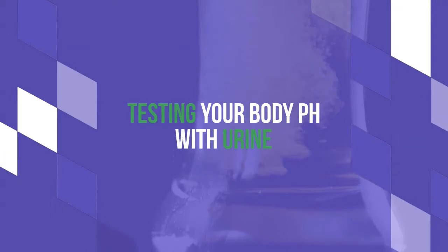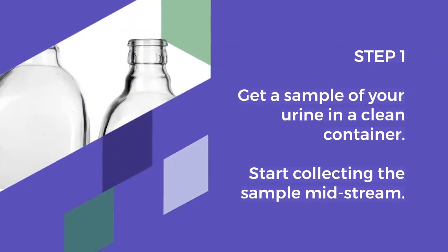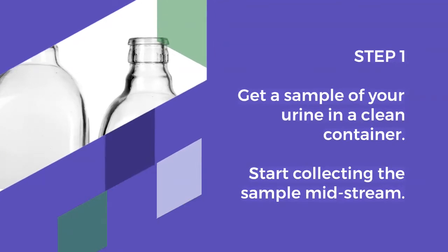Testing your body pH with urine. Step 1: Get a sample of your urine in a clean container. Start collecting the sample midstream.